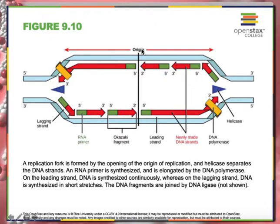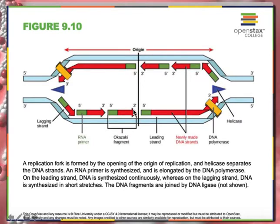On one side, as the point of origin starts to unwind, replication has to be done in little fragments. As this half opens up, it lays down a piece and builds to there, then lays down another piece. These little segments are called Okazaki fragments. So one end gets to be synthesized continuously — nice, long, and neat — while the other side has to be done in these little Okazaki fragments. New bases are added to complementary strands as it goes along: one strand made continuously, one made in pieces.